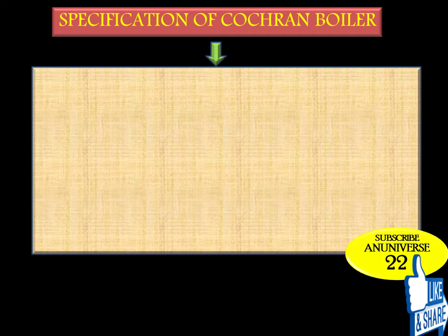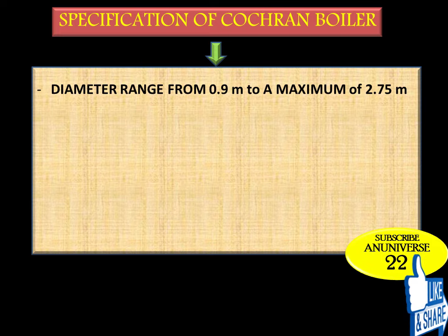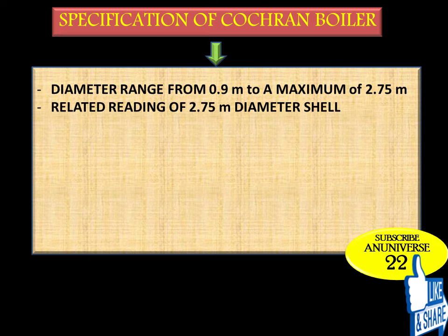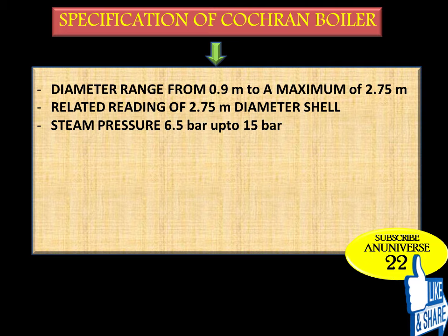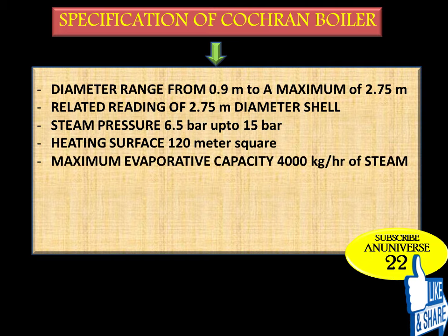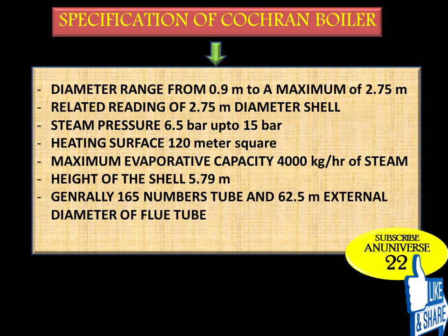Specifications of the Cochrane Boiler: The diameter range is from 0.9 meter to a maximum of 2.75 meters. Steam pressure generally varies from 6.5 bar to 15 bar. The heating surface is approximately 120 square meters. Maximum evaporative capacity is 4,000 kg per hour of steam. The height of the shell is 5.79 meters. Generally 165 tubes of 62.5 mm external diameter are used, and the efficiency of this fire tube boiler varies from 70 to 75 percent.